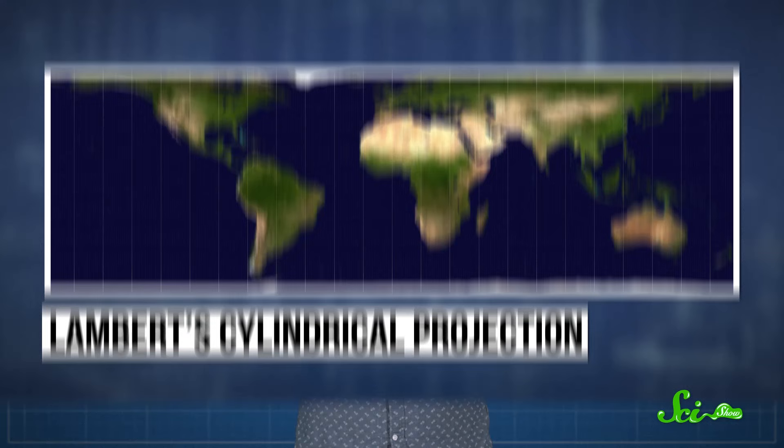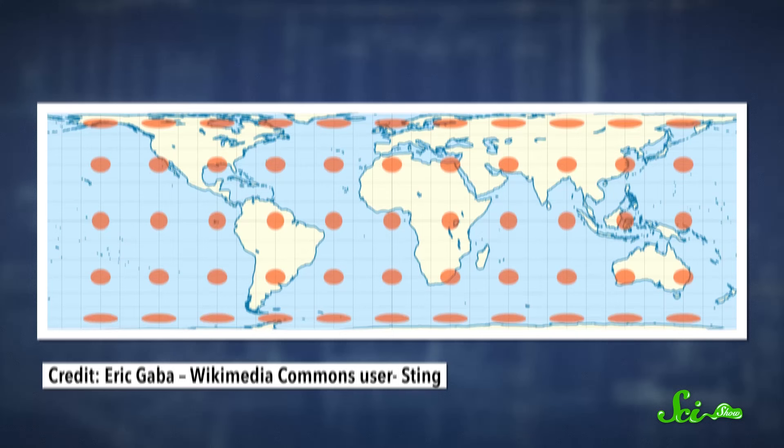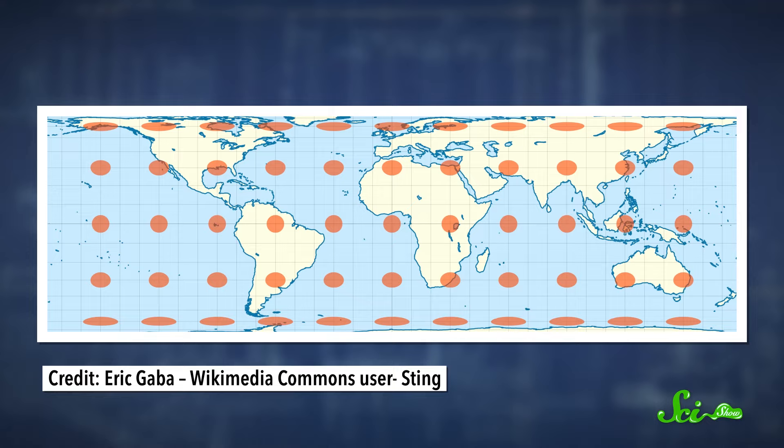There are maps that show everything pretty much the right size, like Lambert's cylindrical projection. But you have to compromise a lot on shape. This type of map is made by placing the globe in an imaginary cylindrical tube of paper. Anything on the globe that lines up with the cylinder gets projected onto the paper. The biggest distortion happens at the poles, where you end up with a lot of horizontal stretching and some vertical squishing.